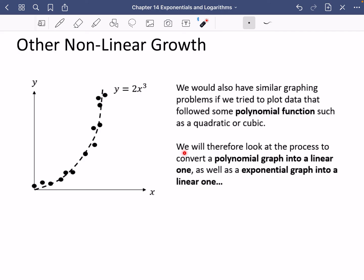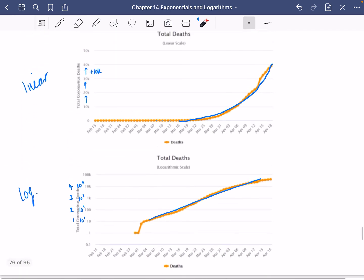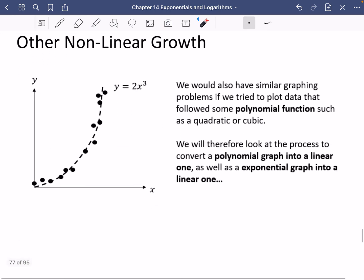What we'd like to do is to be able to turn this into some kind of linear graph. So what we're also going to be doing is we're going to look at the process to convert a polynomial graph into a linear one as well. And we're also going to be thinking about how we might turn an exponential graph into a linear one as well. So in my next video, I'm going to do that theory of how do we go from non-linear growth or exponential growth and turn it into a linear problem so that we can solve many more interesting things about these scenarios.